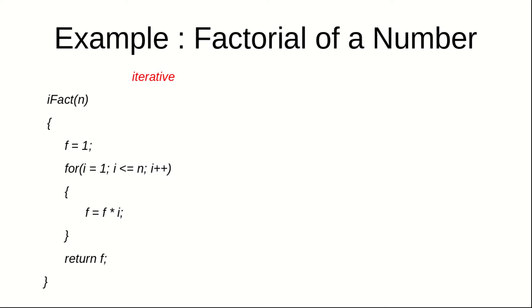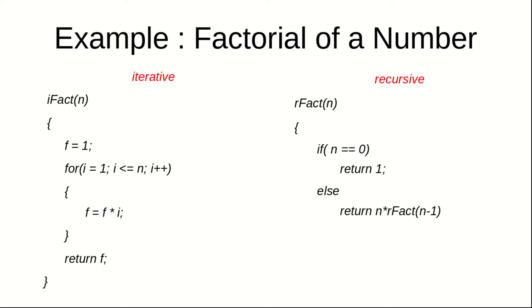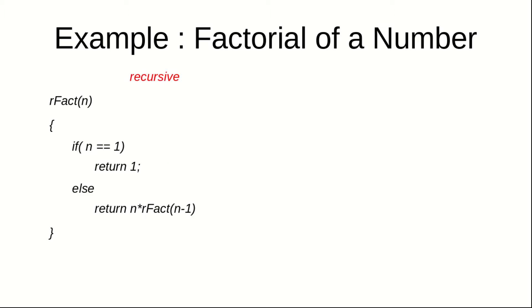The same thing can be done using recursion. I'm sure you already know how to calculate factorial recursively, but just a quick revision. We write a function called rfact which accepts an argument n. If the value of n is equal to 0, we return 1 — this is the base case. Otherwise, we return n multiplied by rfact(n minus 1). Let us understand how this works inside a computer.